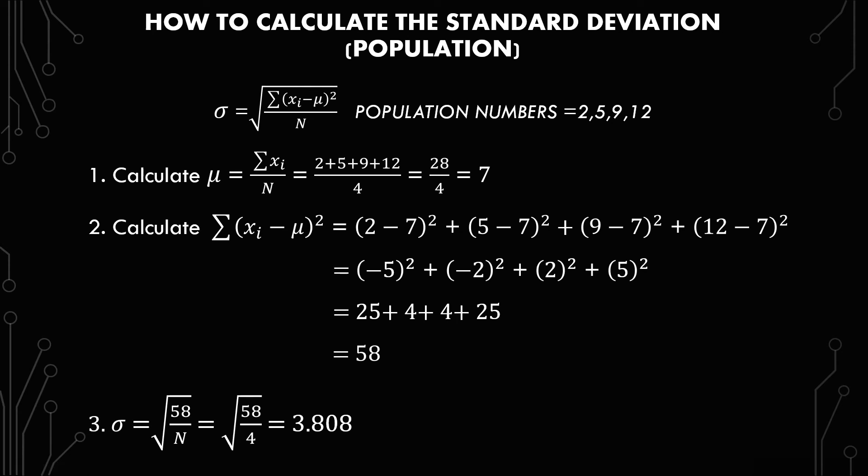So that's really where the change is. Everything else is the same, but it's at the very end. Instead of dividing by N minus 1, you're dividing by N because you're looking at the population.